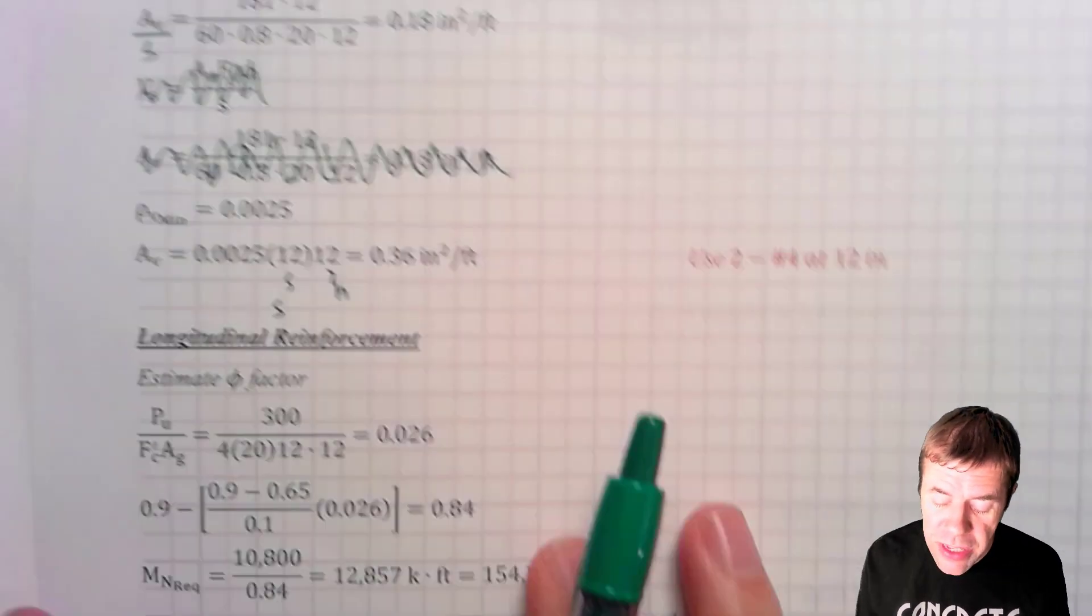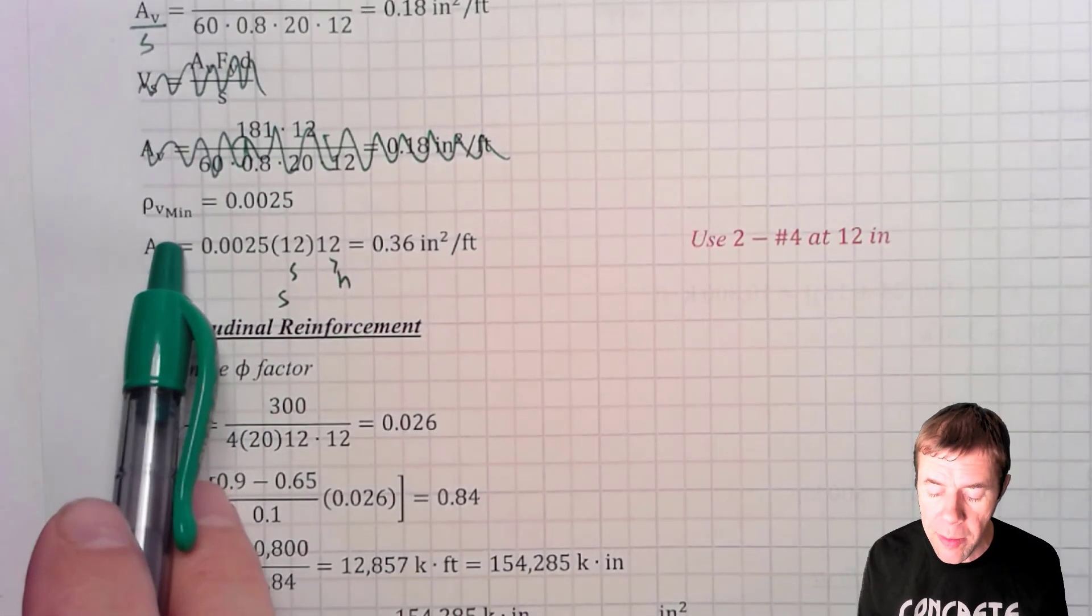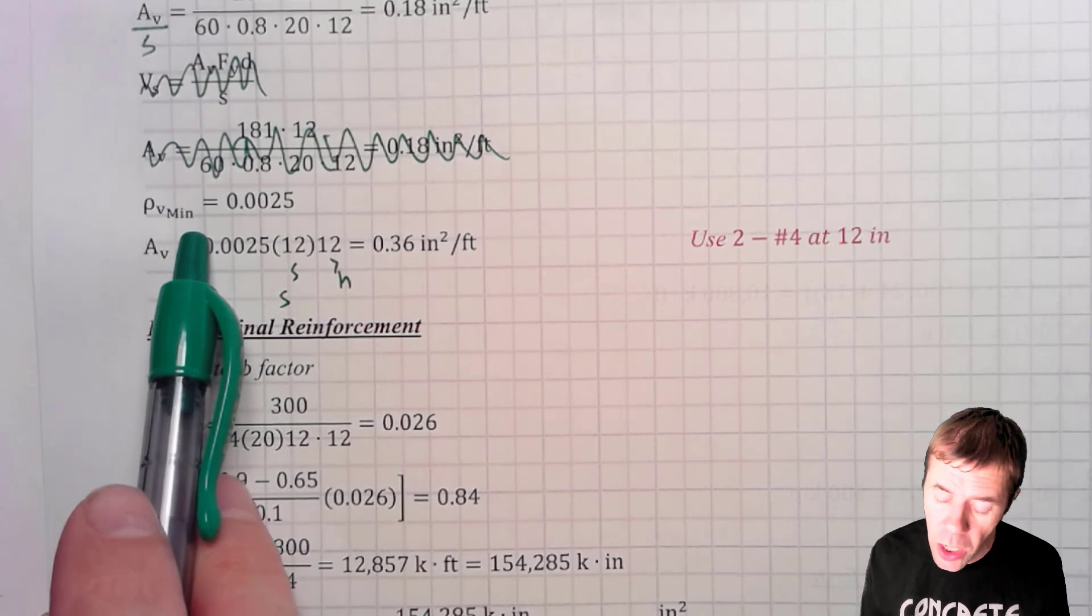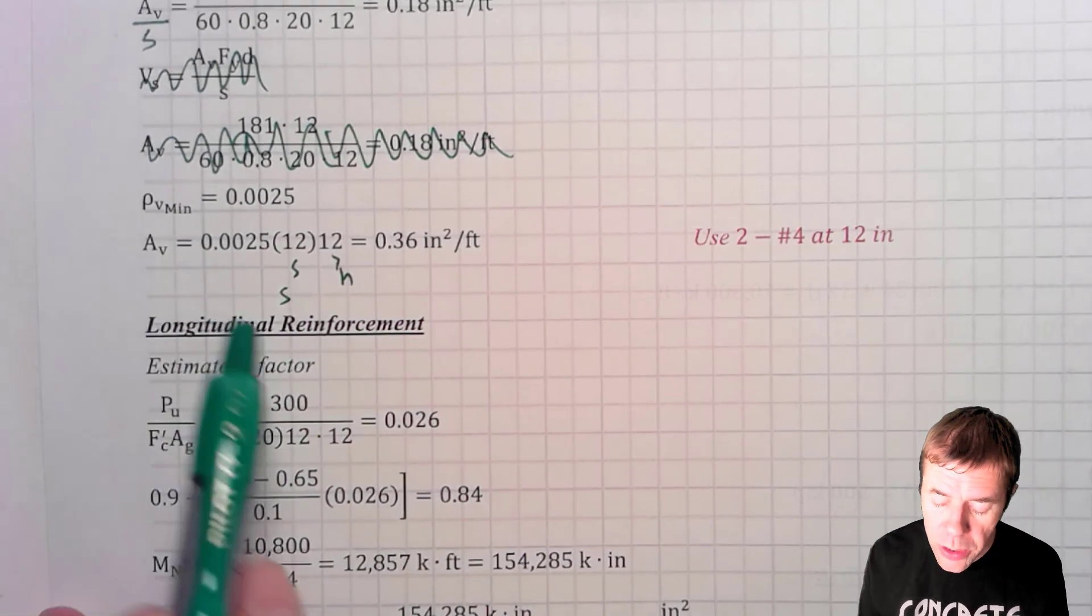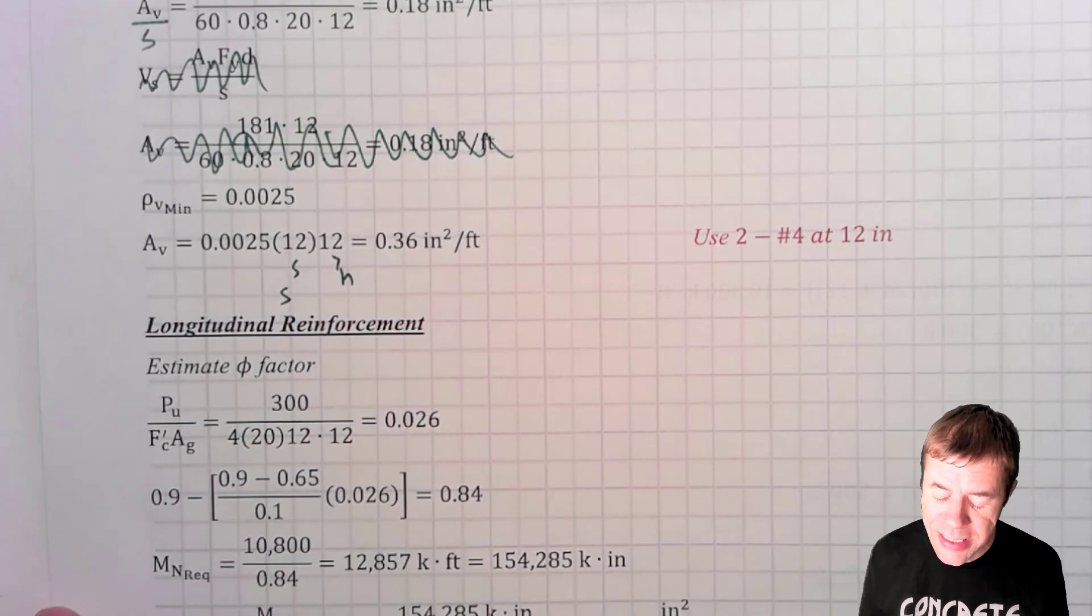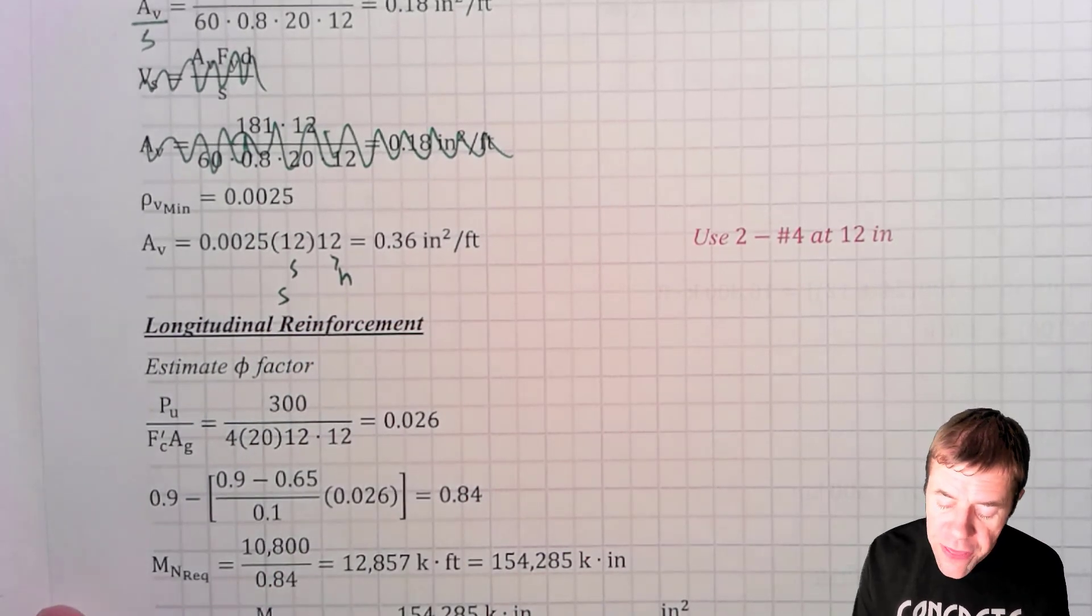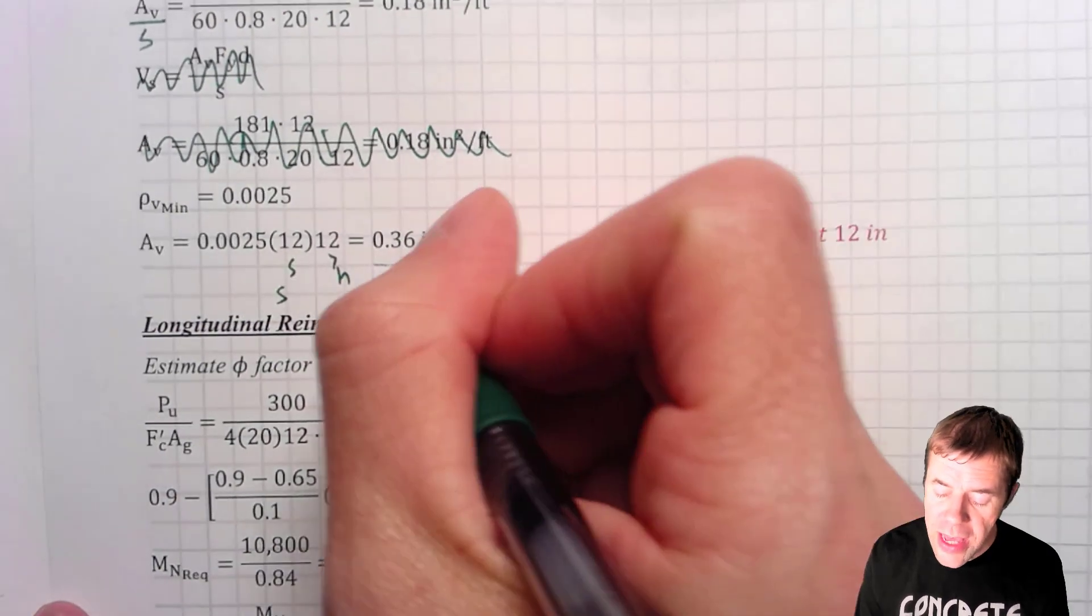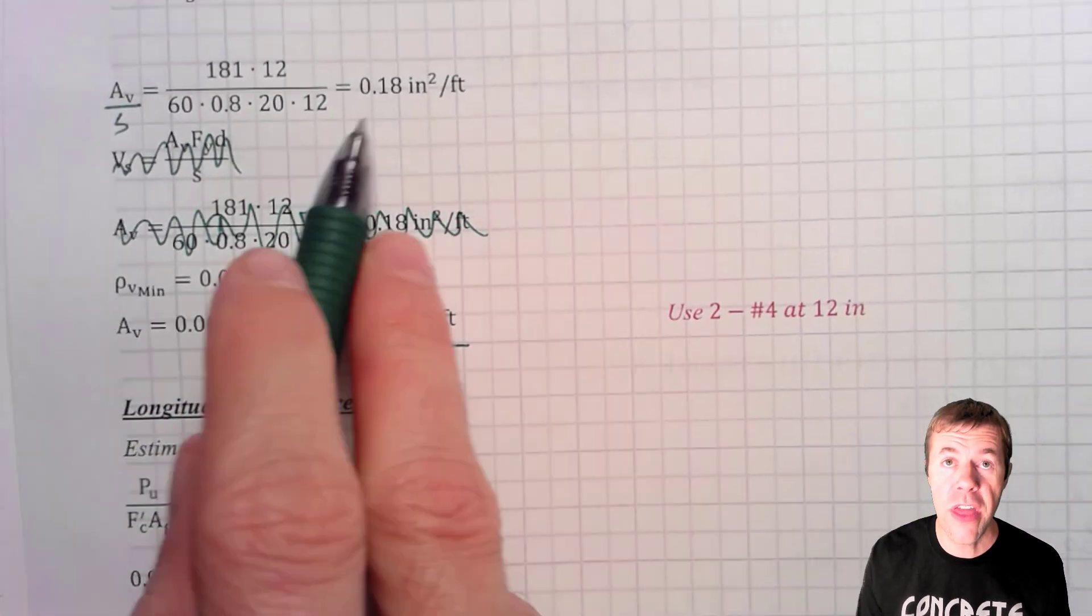But remember, there is this Av minimum, this rho v minimum or Av minimum that I have to calculate. So I calculate it here, this 0.0025 times my s times my h, which comes out to be 0.36 inches squared per foot. This is going to control. This requires more than this. The minimum controlled.